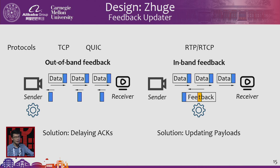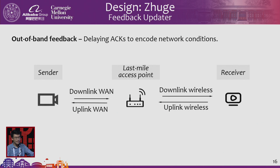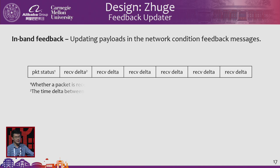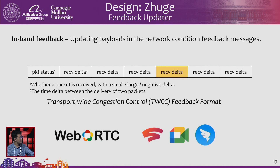For in-band feedback, network conditions such as packet reception intervals are embedded in the feedback payload, and we can simply update or rewrite those specific fields. When there are packets arriving from the sender side, corresponding uplink ACKs for the same flow arrive at the access point at the same time. We can delay the second ACK packet to signal to the sender that delay in the network is increasing. This is applied to transport-wide congestion control in the RTP/RTCP protocol.